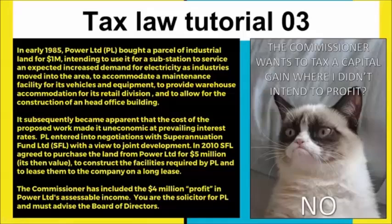For the next question we're looking at extraordinary business income versus capital gain. There's quite a lot of reading for what's essentially a simple scenario: an entity purchased a parcel of land and intended to use it themselves — to build their head office and put a substation in. Later on it becomes apparent that's not economically viable. Some 25 years later, they enter into a contract with a third party to jointly develop it, essentially sell the land and lease it back, receiving a good sum of money from doing that.